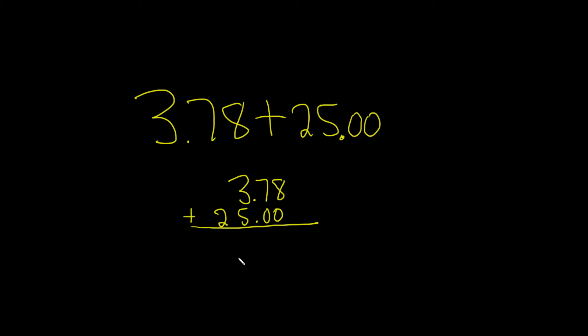Now we perform the addition. 8 plus 0 is 8. 7 plus 0 is 7. Keep the decimal. 3 plus 5 is 8. Bring down the 2. 28.78.